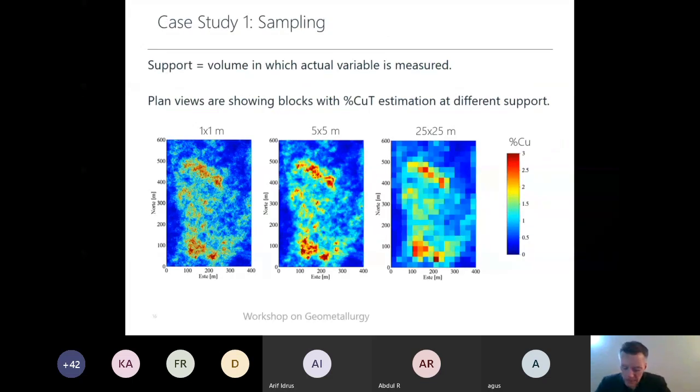We have finished with the review, and finally, we want to check these four cases. First of all, we are going to talk about sampling, the importance of sampling. Support. What is support? Support is the volume in which actual variable is measured.